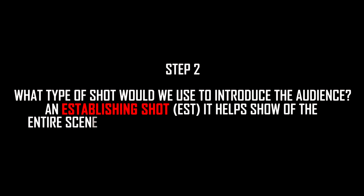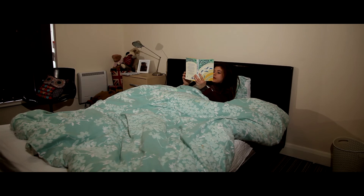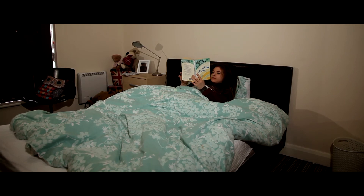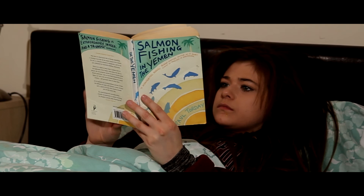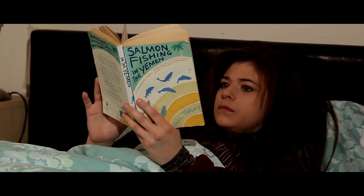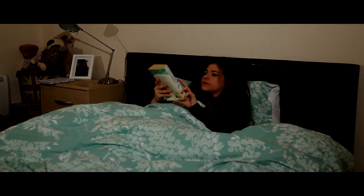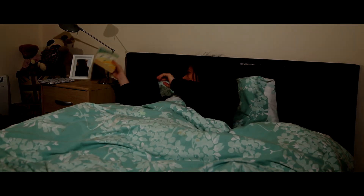Step two: what type of shot would be used to introduce the audience? An establishing shot — it helps show the entire scene and gives the audience a view of the room. Slowly going to a close-up to show her expression reading the book. As she gets ready for bed, go to a mid-shot to show her getting comfortable. Add some colour correction and we're done.